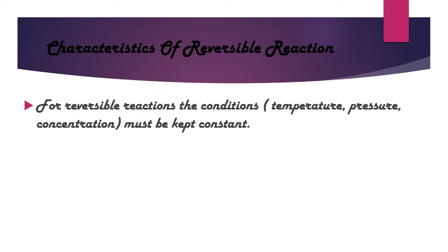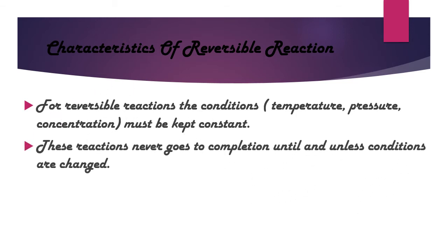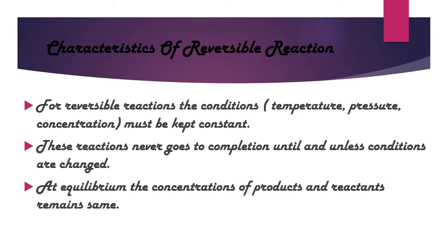Now, what are the characteristics of reversible reactions? For a reversible reaction, the conditions — temperature, pressure, and concentration — must be kept constant. Similarly, these reactions never go to completion unless or until the conditions are changed. The reactant is converted into product, and when the concentration of the product is high, the product is reconverted into the reactant. So these reactions are continuous. At equilibrium, the concentration of product and reactant remain the same — the ratio is constant.